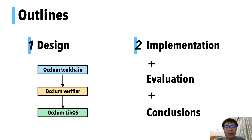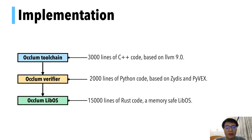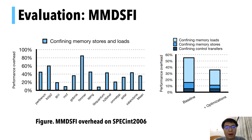This covers our design. For implementation: our toolchain is based on LLVM and includes 3,000 lines of C++ code. Our verifier is written in 2,000 lines of Python code with Capstone and PyELF. The LibOS is written with 15,000 lines of Rust code, making it a memory-safe LibOS. For evaluation, let's first look at how much overhead MMDSFI adds. We tested MMDSFI on SPEC 2006 and found about 34% performance overhead, and our optimization reduced that by 20%.